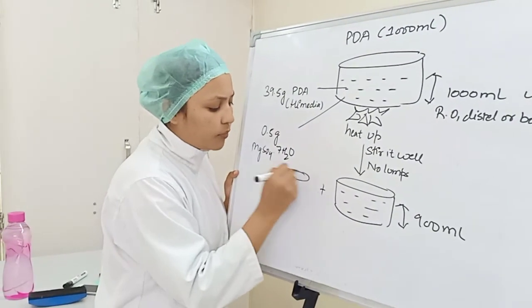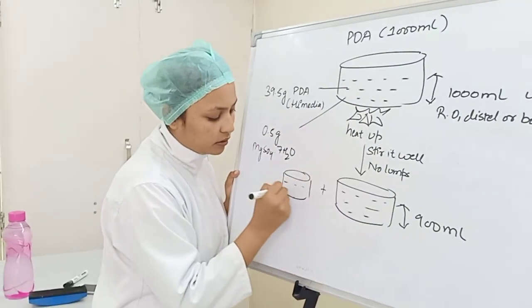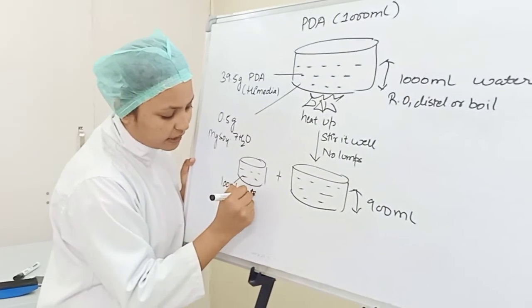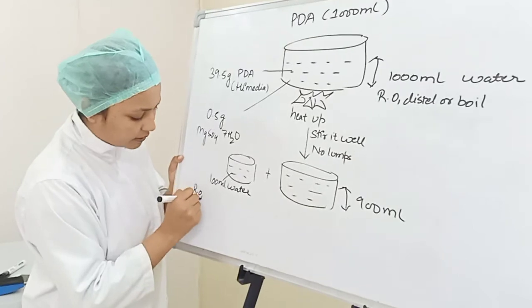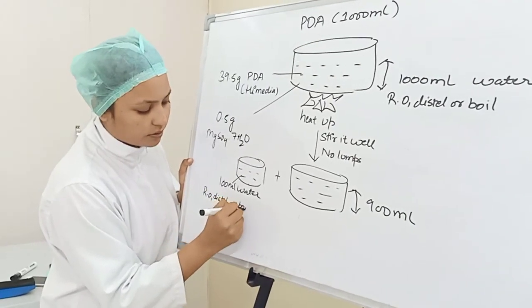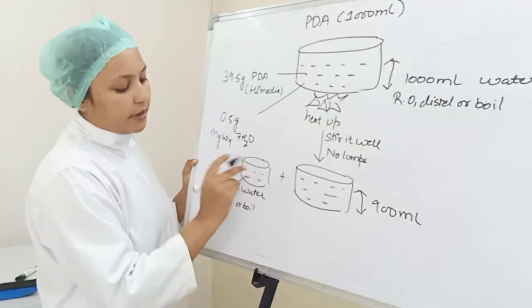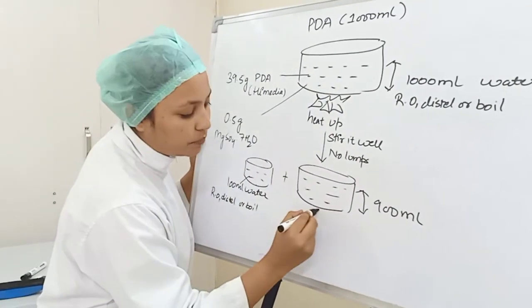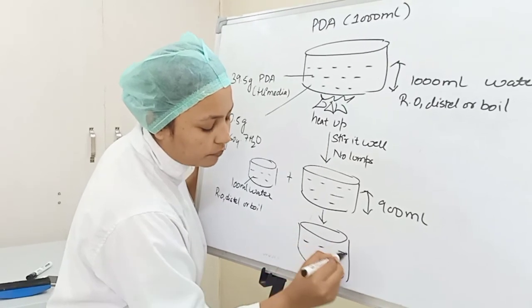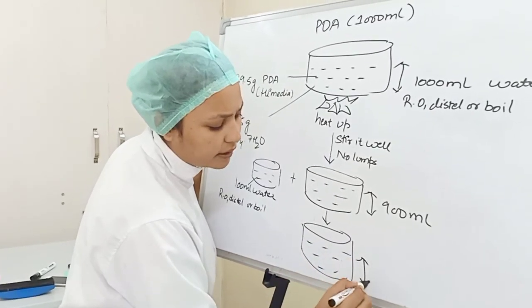Then you will add 100 ml water, the same as RO, distilled or boiled water. Then when you mix 100 ml and 900 ml, then you will have 1000 ml PDA ready.